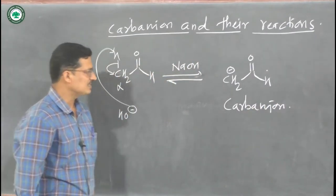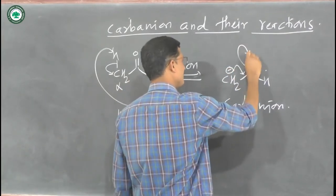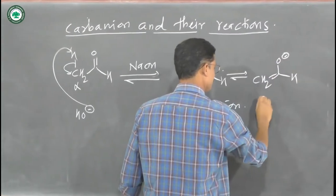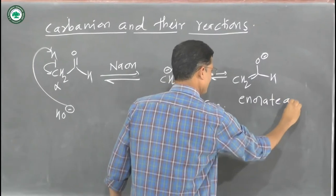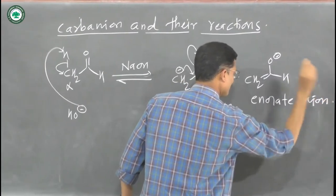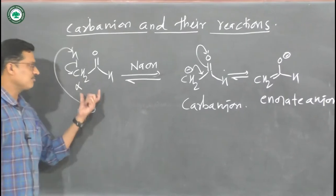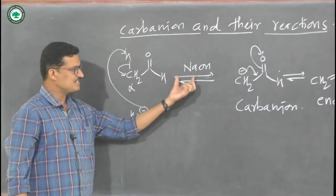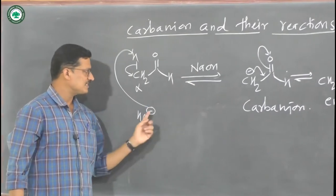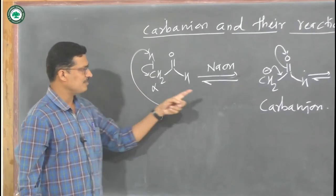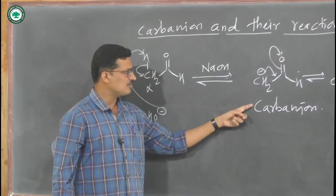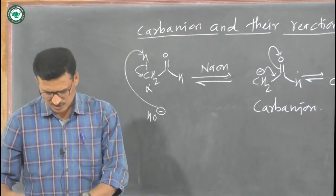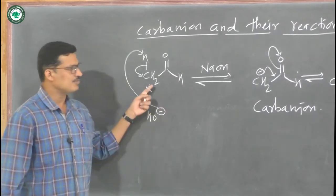When the carbanion is formed, it is converted into the enolate anion. So when carbonyl compounds like aldehydes and ketones are treated in basic medium such as NaOH, the base abstracts the alpha hydrogen, there is formation of a carbanion — carbon with a negative charge — and the carbanion is converted into the enolate anion.